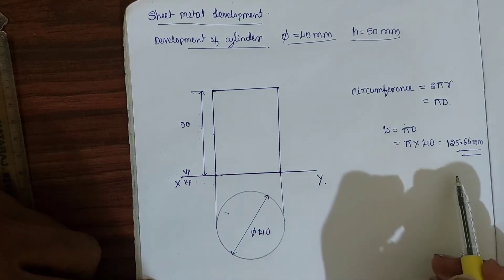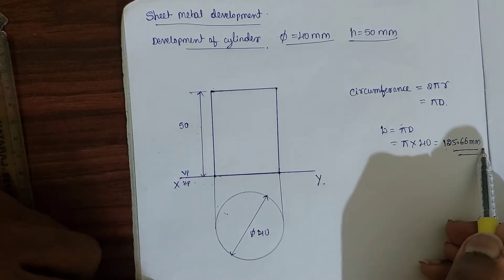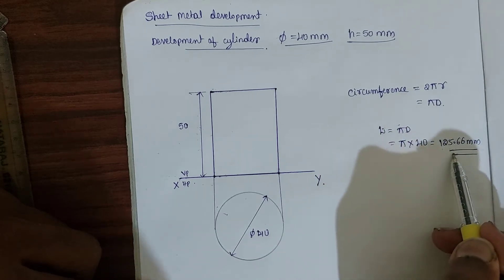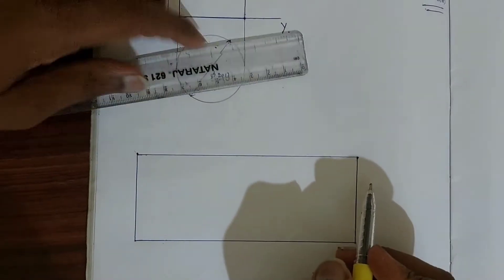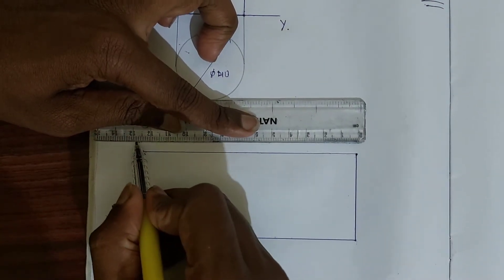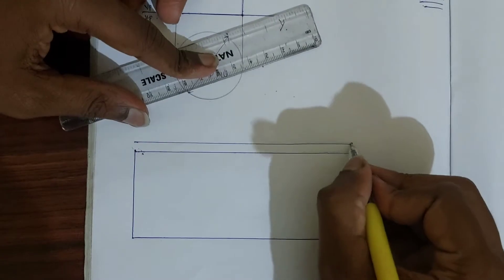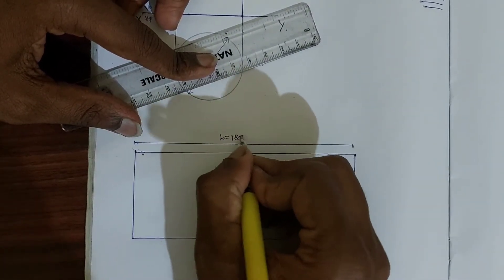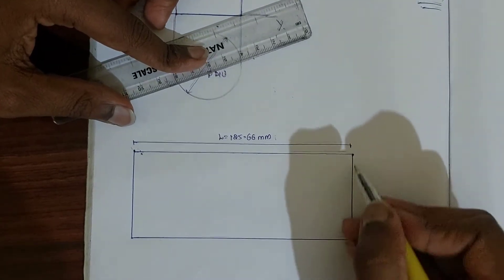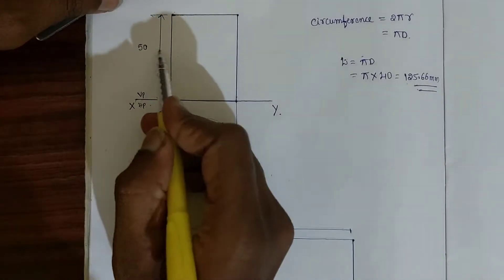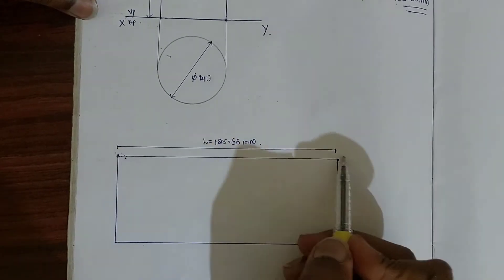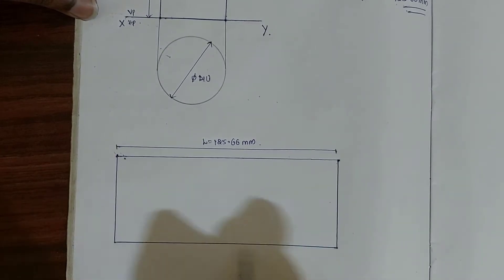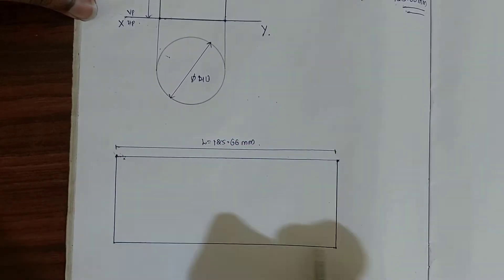So to get a 40mm diameter cylinder, the sheet length required is 125.66mm. Now I'm going to draw the development. This length of 125.66mm is the linear distance calculated, and the height of the cylinder is 50mm. Take a reference point, draw 125.66mm, then draw 50mm at both sides, and join these height lines to get the development frame.